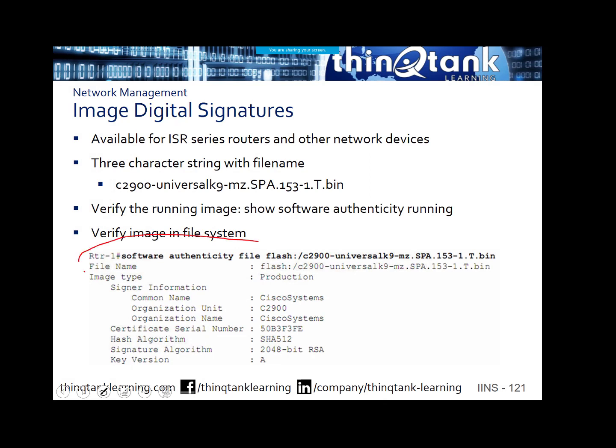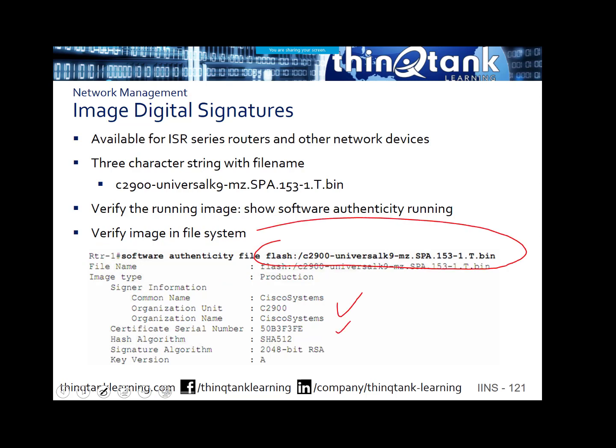There is a command you can actually use — I always use a third-party tool to verify the hash — but you can use the command software authenticity file and then specify the actual image and you can see all of the certificate information for that particular image, what we call the digital signature. Whenever you see an image that has SPA in it, any image that has SPA means it has this function — it's a signed image. Usually I try to verify the signature of the image before I even put it on the device.